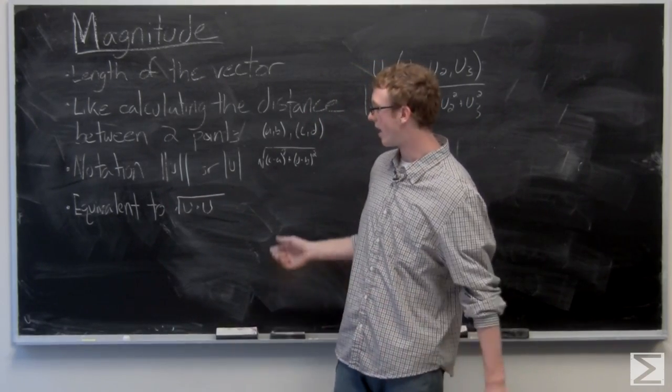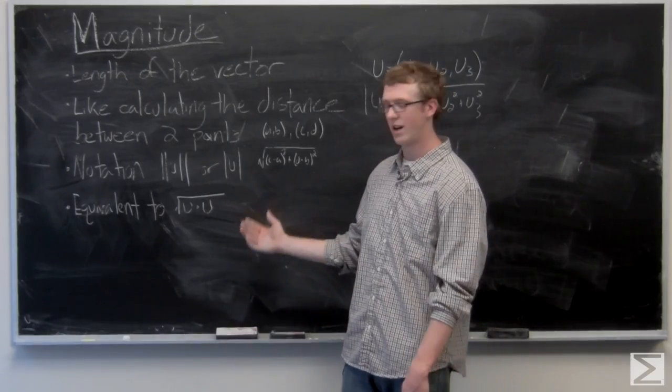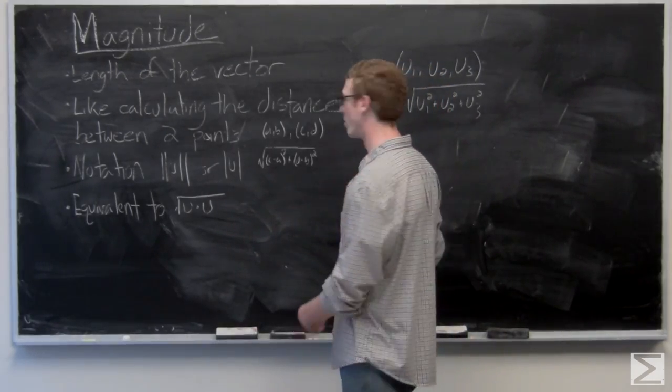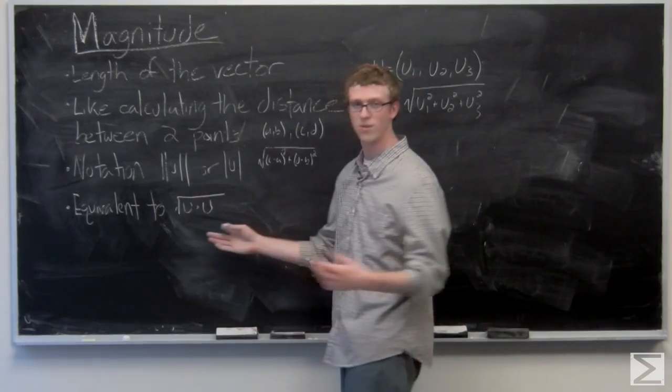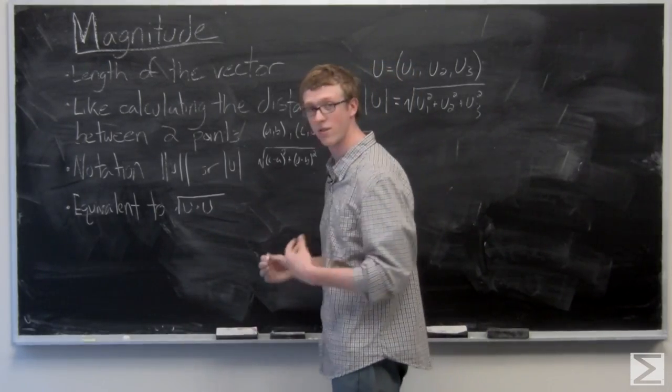And we can see that it's also equivalent to u dotted with itself. If we want to just take a look at that quickly. It's the square root of u dotted with itself.